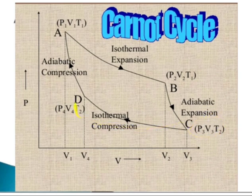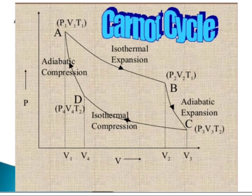At point D, pressure is P4, volume is V4, and temperature is T2 — this is isothermal compression. Then from D to A there is adiabatic compression, and the system goes from the lower temperature to the higher temperature. This completes the PV diagram.